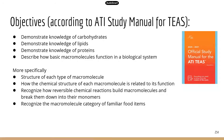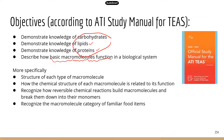Here are the objectives from the ATI study manual. You need to demonstrate knowledge of the four types of macromolecules. I don't know why they only listed three — it could be a typo. I think they're supposed to have all four listed here. So they are carbohydrates, lipids, proteins, and the nucleic acids. You also need to be able to describe how basic macromolecules function in the biological system — basically the specific functions of each group.